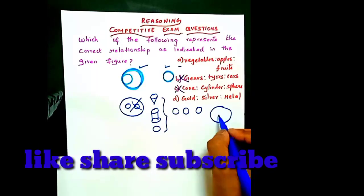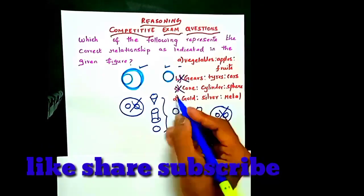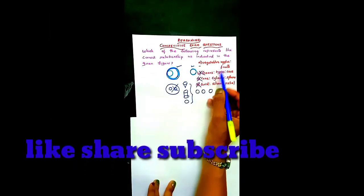Now, if you look at D, it's gold, silver, and metal. Metal includes gold and silver. So the answer is option A. In option A, there are fruits.